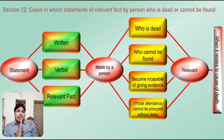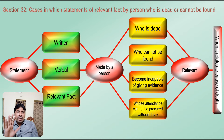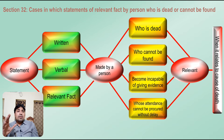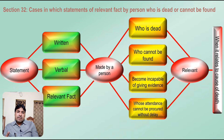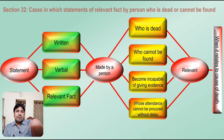In Section 32, the concept of dying declaration specifically concerns who is dead. Who cannot be found, who has become incapable of giving evidence, whose attendance cannot be procured without delay — these are other provisions. But Section 32 specifically states that if a person's statement, oral or verbal, and that person has died and while dying he stated the cause of his death, that becomes relevant. Similarly, a person who cannot be found and states a reason — that also becomes relevant.